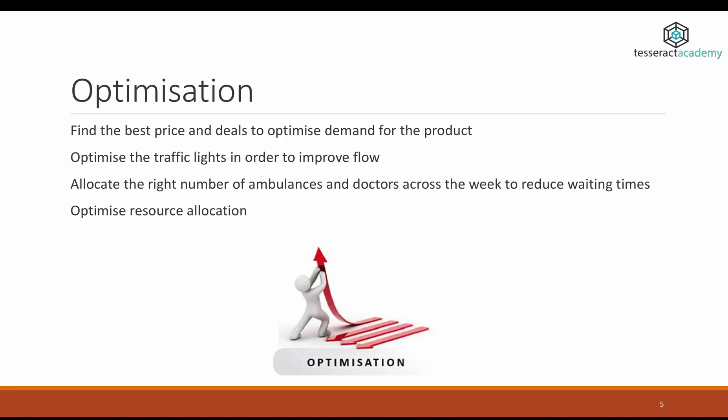So an optimization model could help you allocate the right number of ambulances and doctors across the week in order to minimize waiting times. This already assumes that you have a predictive model or at least a statistical model into which you can input some parameters, which are directly in the real world under your control. You can control the total number of doctors that will be in a hospital or the number of ambulances. You can buy more, for example. And then the algorithm tries to find the best solution for you.